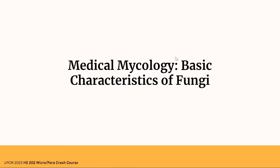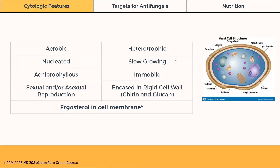So what are the basic characteristics of fungi? Fungi are aerobic, meaning they need oxygen to survive. They're also nucleated, meaning they have a true nucleus, which makes them eukaryotic. They're achlorophyllous, meaning they have no chlorophyll, even though some fungi may have a green color to them.